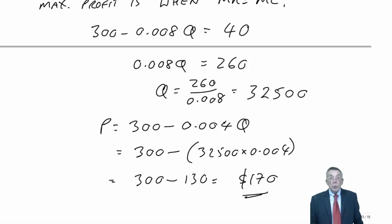130. If we have a selling price of 170, we'll sell 32,500 units.